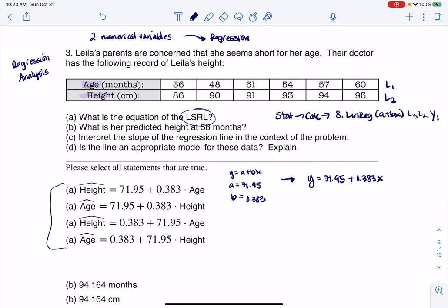And it's at this point I can rule out these two options. And then it's going to become a matter of which one is the independent variable and which one's dependent, or explanatory in response. And you can see that our first variable, age, that's our X, because we're trying to figure out if I knew Layla's age, could I predict her height. So my height is going to be predicted by the equation 71.95 plus 0.383 times the age. So in that case, that's going to be option A.